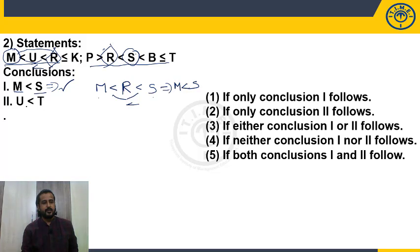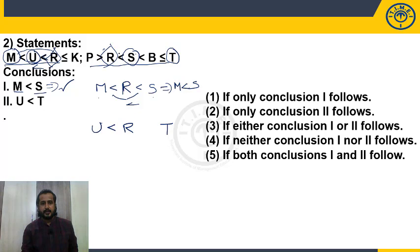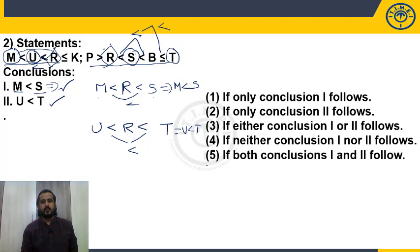Second conclusion: U < T. Common element linking U and T is again R. U and R: less than, so U < R. R and T: less than, less than or equal to leads to less than — so R < T. Therefore U < R < T gives U < T by transitivity. Second conclusion also follows. Both 1 and 2 follow — answer is choice 5. In the exam, do this mentally without writing it down to save time.